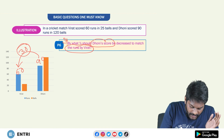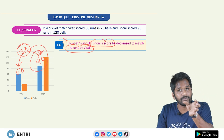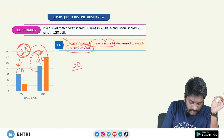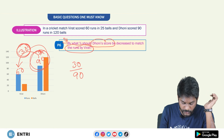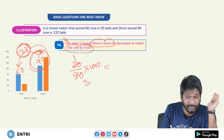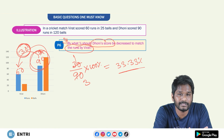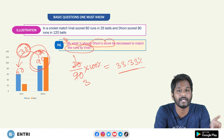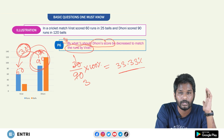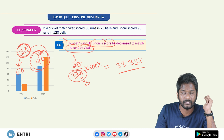The sixth problem: by what percent should Dhoni's score be decreased to match Virat's score? The reference is 90, so 90 is the denominator. The difference is still 30. The ratio is 30 by 90, multiplied by 100%. One time and three times — 1 by 3 is nothing but 33.33%. So Dhoni's score decreased by 33.33% equals Virat's score. In the previous question, Virat's score increased by 50% equals Dhoni's score.